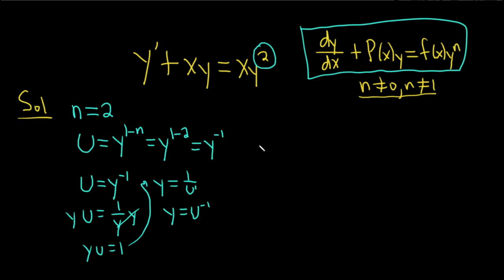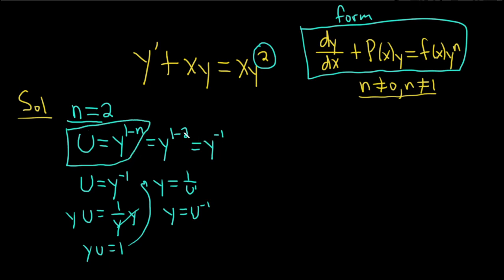Quick recap of what we've done. First, notice the equation is Bernoulli — whenever you have y to a power, chances are it's Bernoulli, as long as it fits the standard form. Then you identify n and use the super important formula u equals y to the 1 minus n. You plug in n and then solve for y.